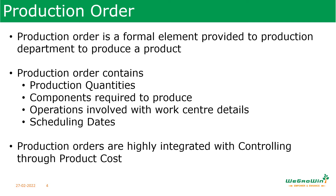A production order is the formal element that informs the production department on how to proceed, what to produce, and when to produce. It contains details on production quantities, the components required to produce the material, all the operations required including the work centers, scheduling details, and many other details.